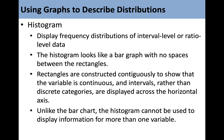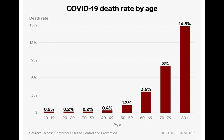A histogram displays frequency distributions of interval level or ratio level data. The histogram looks like a bar graph with no spaces between the rectangles. Rectangles are constructed contiguously to show that the variable is continuous, and intervals rather than discrete categories are displayed across the horizontal axis. Unlike the bar chart, the histogram cannot be used to display information for more than one variable. This particular histogram shows COVID deaths — it's dated because it was made last year.